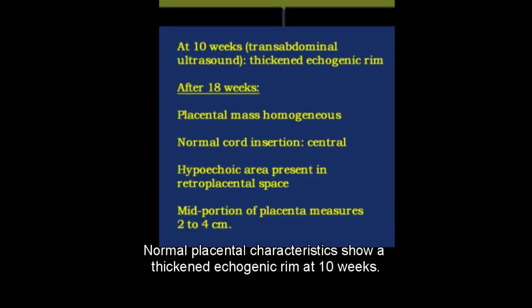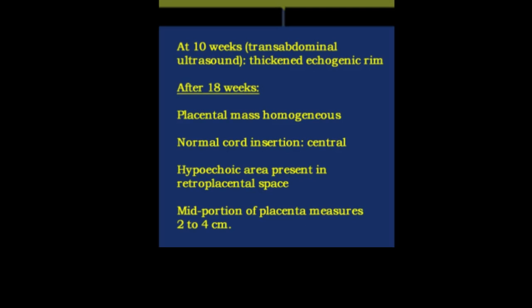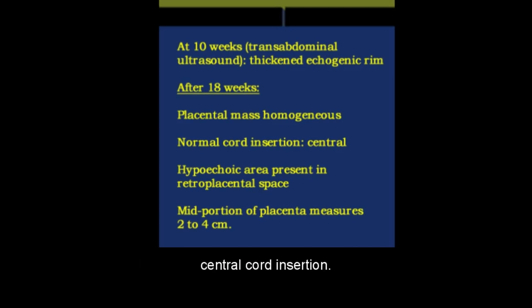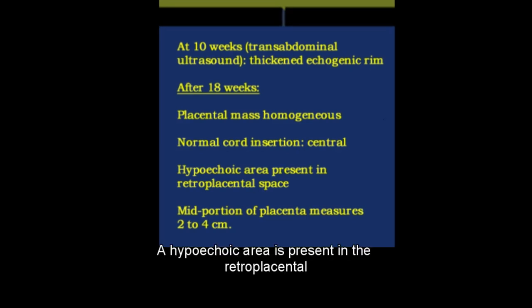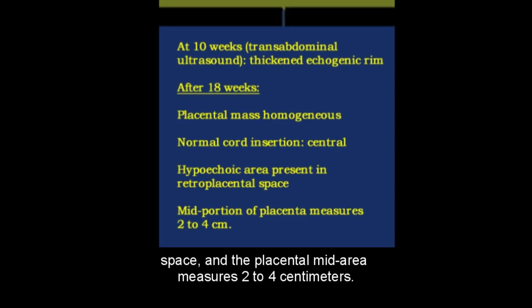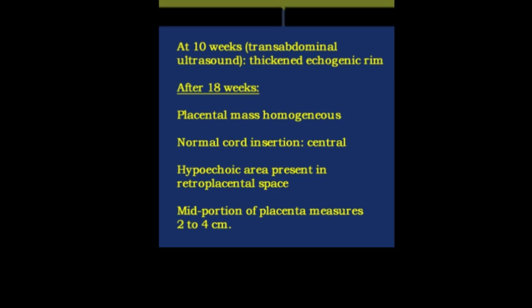Normal placental characteristics show a thickened echogenic rim at 10 weeks gestation. After 18 weeks, there is a homogeneous placental mass and normal central cord insertion. A hypoechoic area is present in the retroplacental space, and the placental mid-area measures 2 to 4 centimeters.